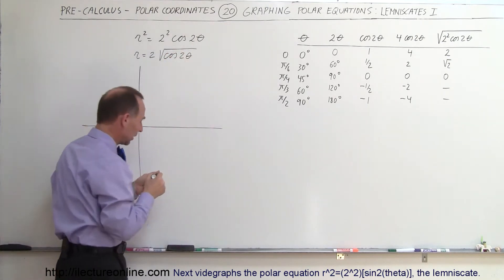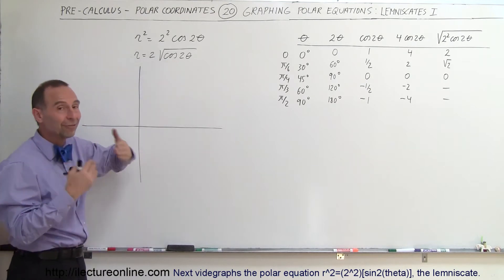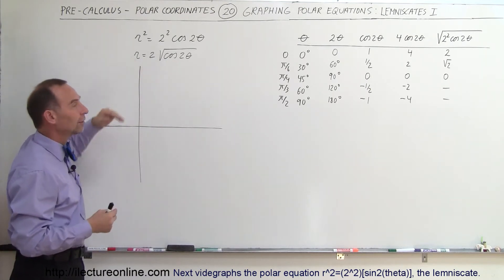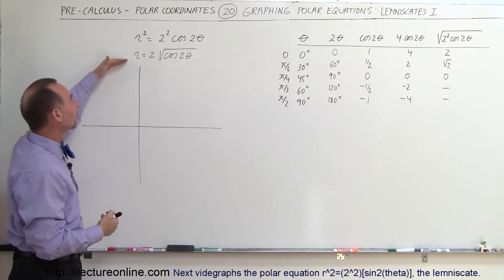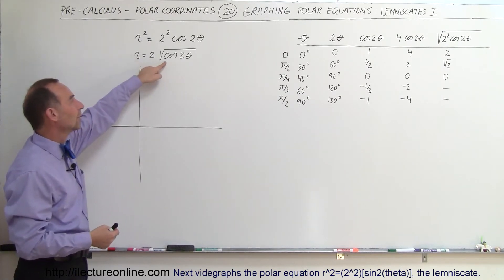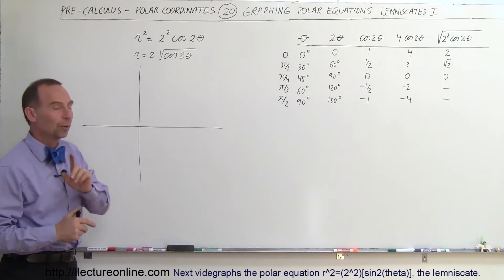And right away we realize that when the cosine of 2 theta is a negative value, we cannot take the square root of that, so we can only take the acceptable or allowable values of this particular function whenever what's underneath the radical is a positive number.